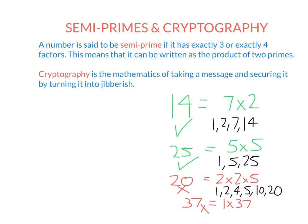Semi-prime numbers are used extensively in cryptography. Cryptography is where we use maths to take a message we want kept secret, encode it, so that someone else can decipher that message while anyone who intercepts it cannot. That's what we're going to look at on the next slide.